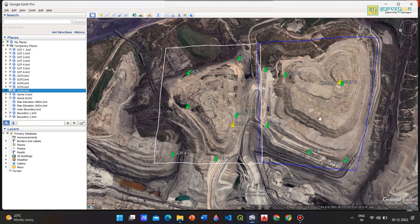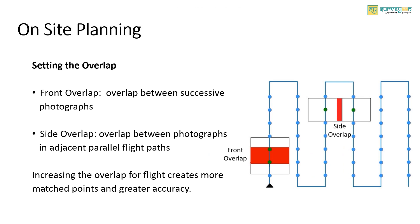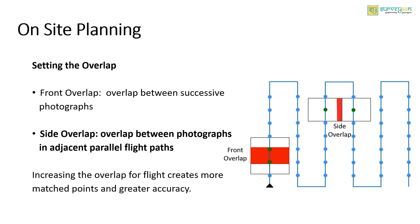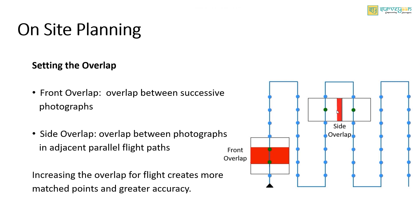Planning just the KML is not enough. We also need to be aware of other parameters that significantly affect the result while mapping large areas. Overlap matches features between photographs. There are two types: front overlap and side overlap. The overlap between successive photographs on a flight path is called front overlap. Increasing the front overlap means the camera captures more photos quickly, and it only affects the number of images. The overlap between photographs in adjacent parallel flight paths is called side overlap. Increasing the side overlap gives more matched features in the imagery but reduces the area your drone can cover in one flight.